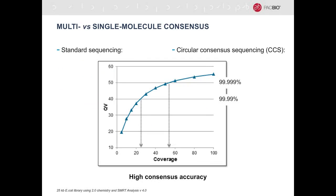This is how the consensus accuracy develops with respect to depth of sequencing. At about 20 to 30-fold coverage, PacBio reaches QV40 or 99.99%. Around 50 or 60-fold coverage, it crosses QV50, 99.999%, or less than one error per 100,000 bases. This is a way to get extremely accurate sequence, both in a multi-molecule way commonly done for Mendelian diseases, as well as on the single molecule level.